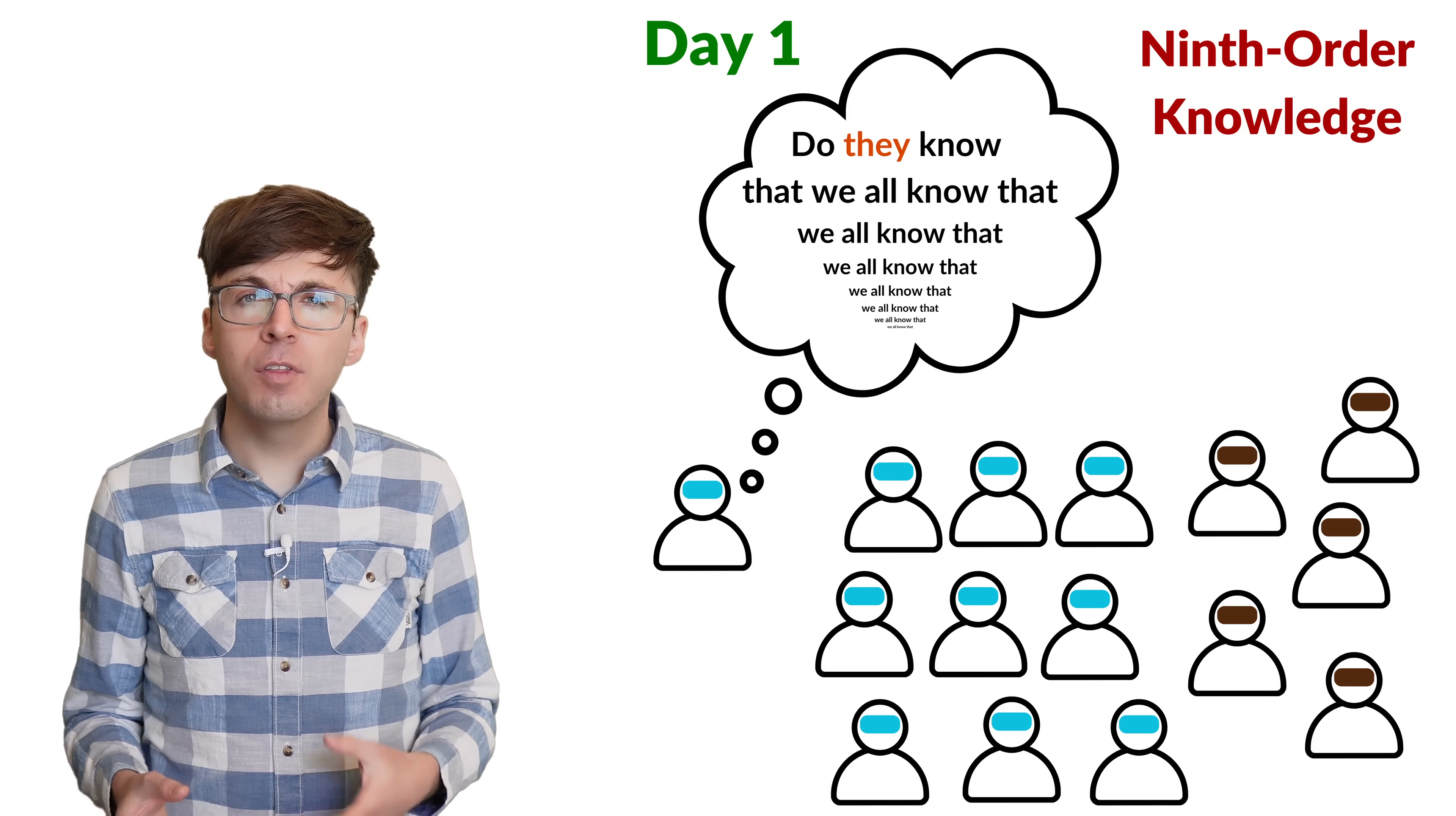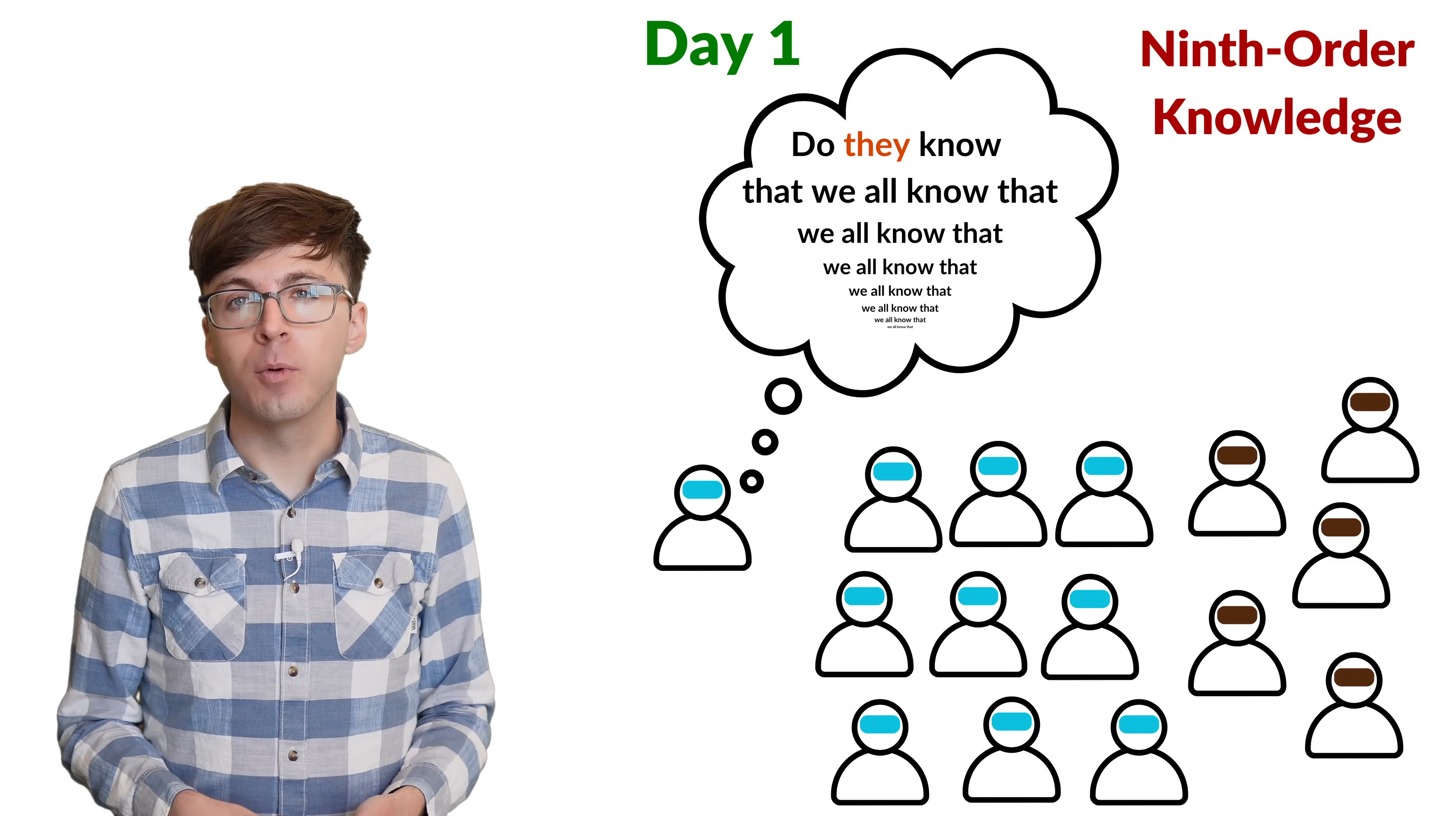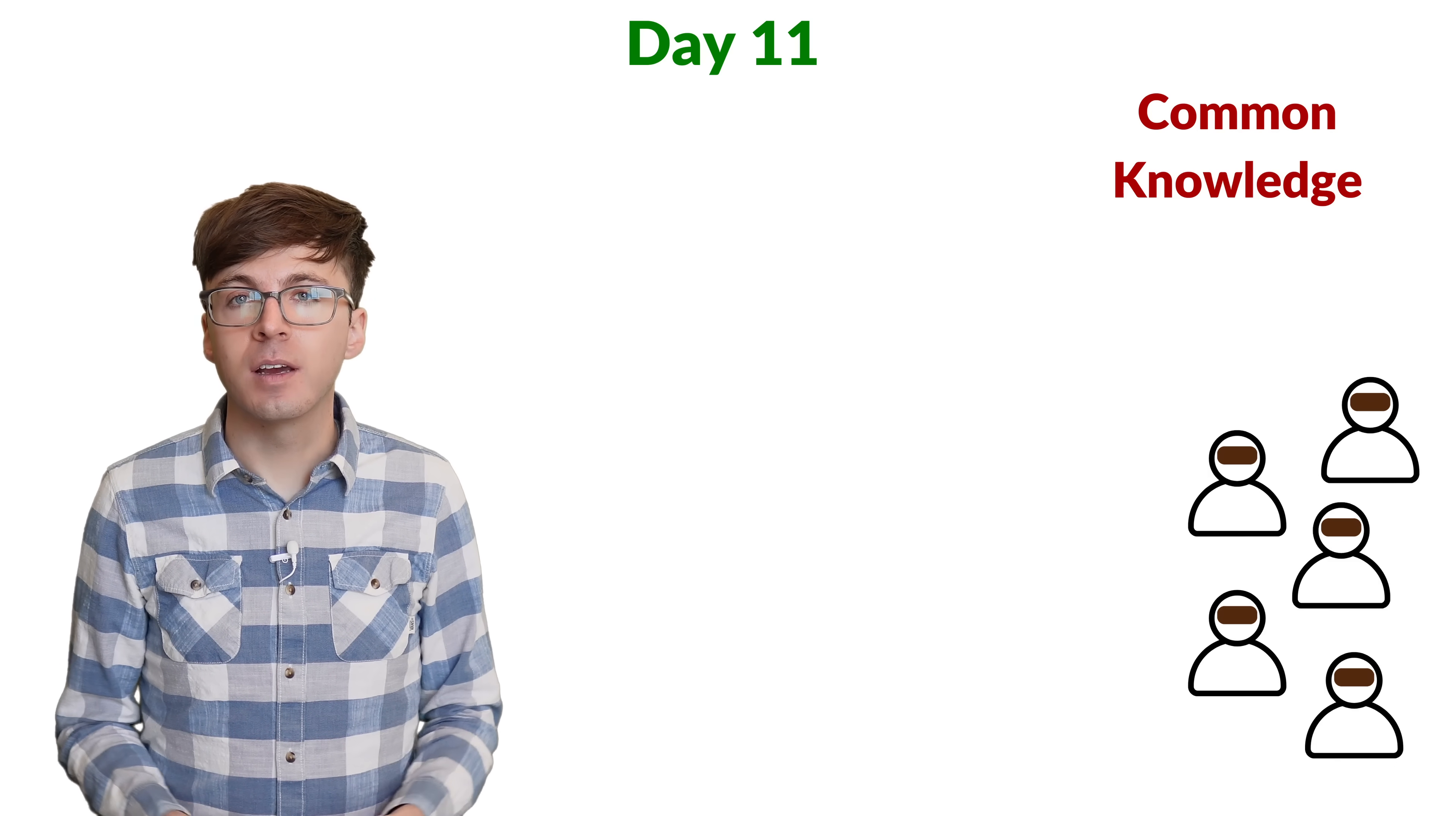Initially, the knowledge that there's a blue eyed person on the island is ninth order knowledge. Each blue eyed person knows that there are at least nine people with blue eyes, but they don't yet know that the other blue eyed people also see nine people with blue eyes. But after the stranger makes the statement, it becomes common knowledge. When no one leaves on night nine, all the blue eyed people realize that they must be the tenth blue eyed person on the island, and they all leave on night ten.